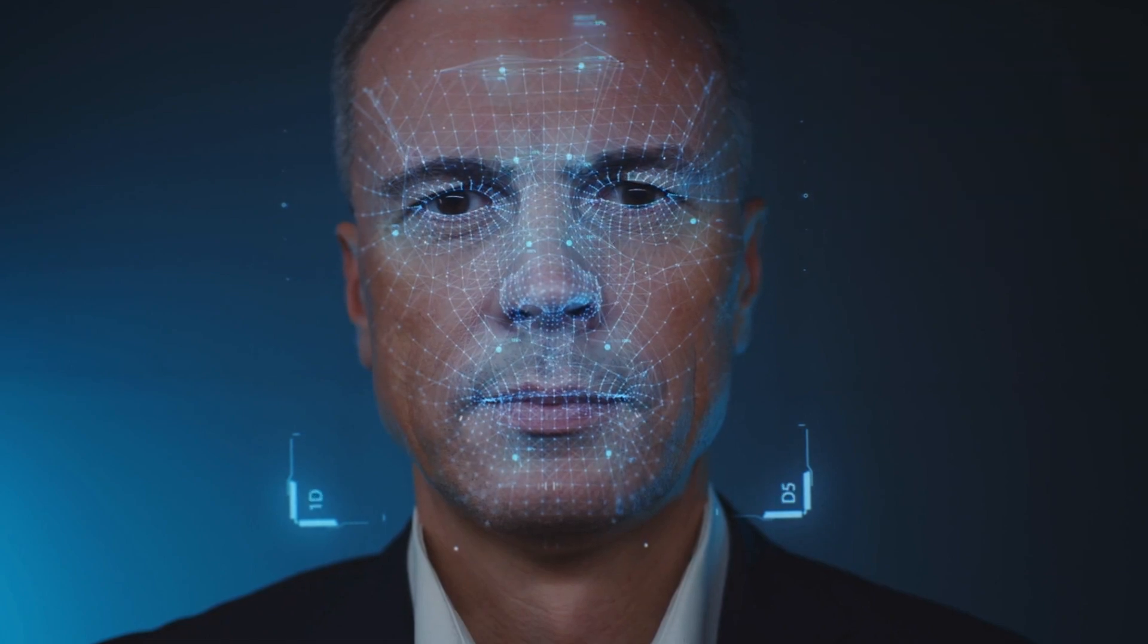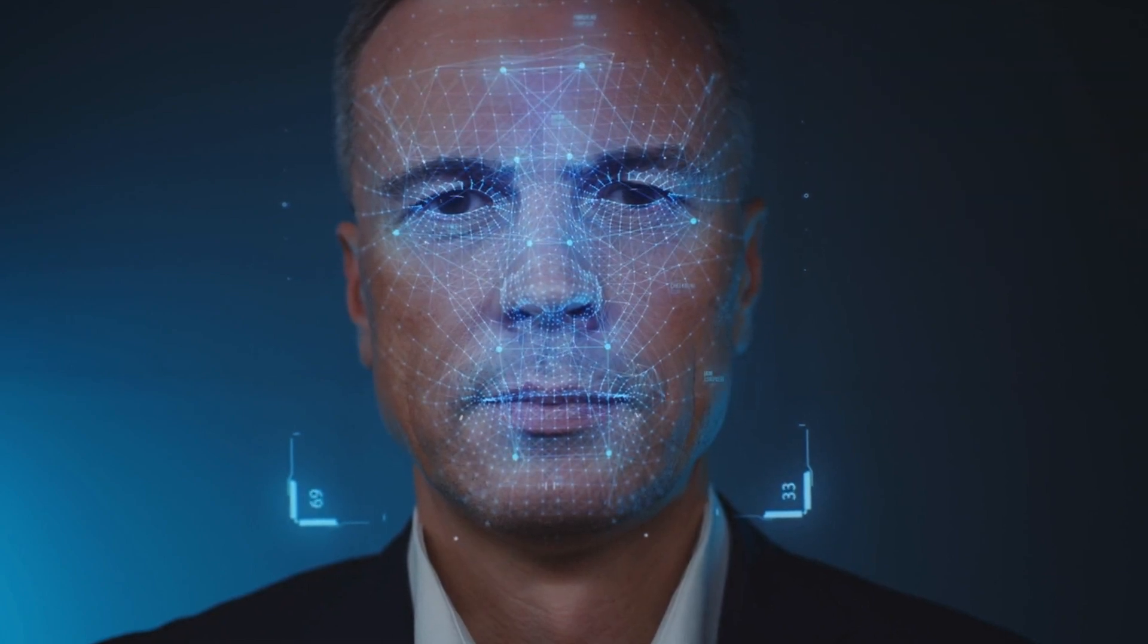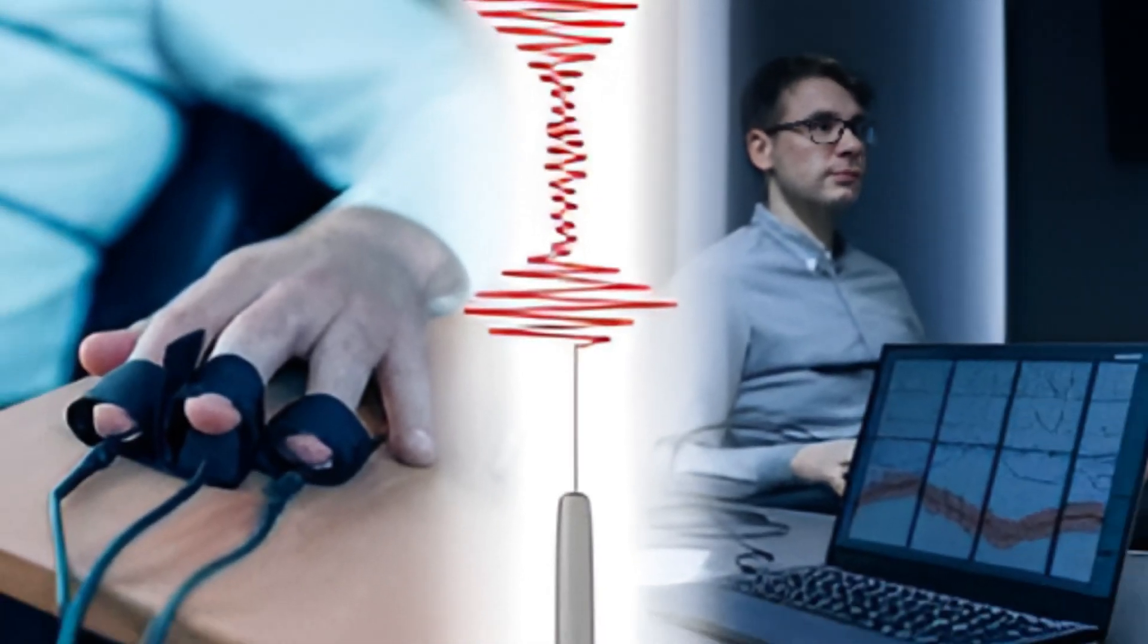AI is also becoming better at reading lips and even detecting lies by observing small facial movements. While humans can only tell if someone is lying about 55% of the time and traditional lie detectors work 80% to 90% of the time, AI could be much more accurate.